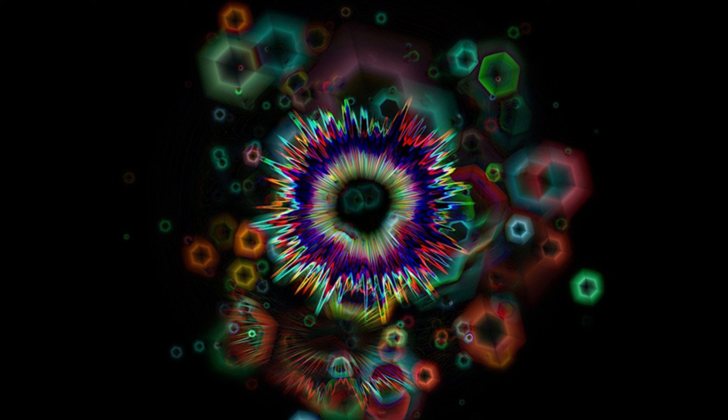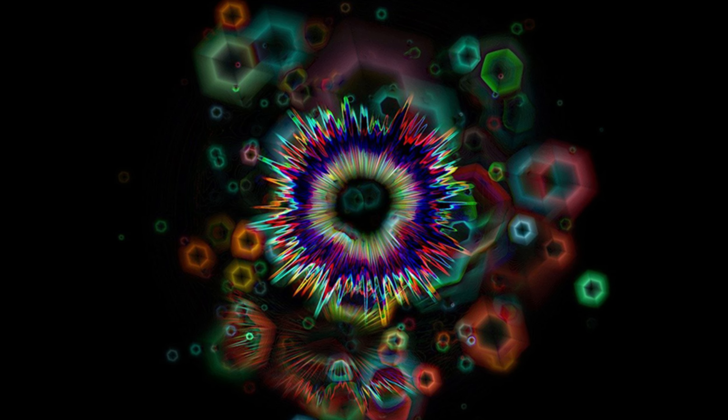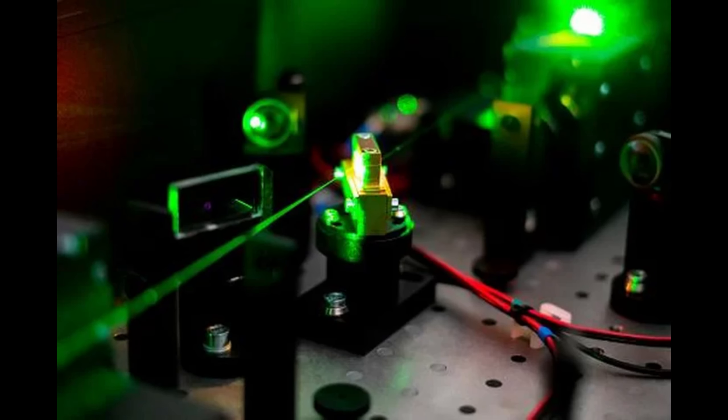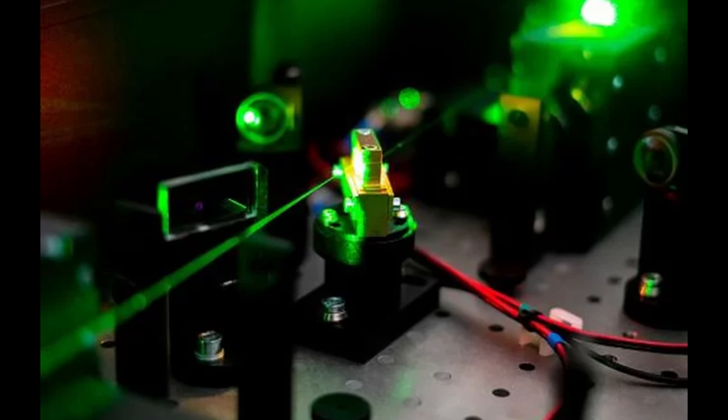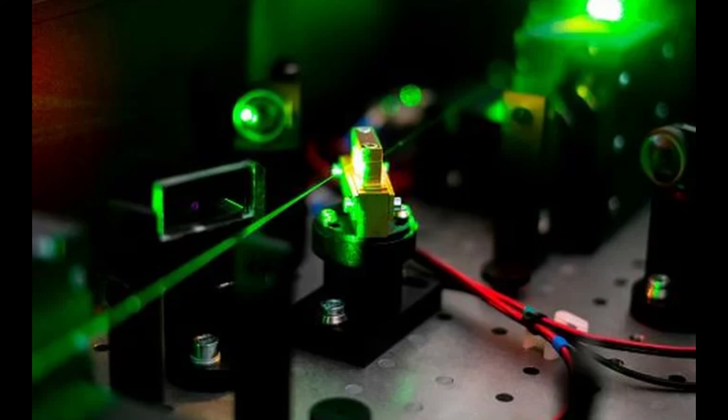Holographic principle posits that all the information within a volume of space can be represented on the boundary of that space, hinting that our 3D reality might emerge from a 2D surface.